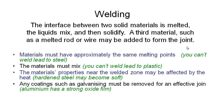Another thing to keep in mind is that any coatings such as galvanizing on steel must be removed before welding to create an effective join. If we try to weld with galvanizing on the steel, it gets into the weld and causes impurities which can weaken it. We should also be aware that some metals like aluminium have a strong oxide film on them almost all the time, and we need special techniques and welding technologies to get through that oxide film and weld the metal underneath.